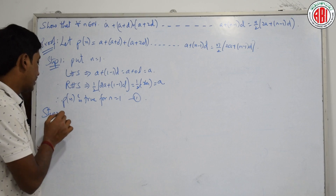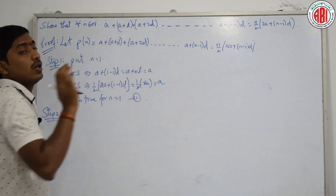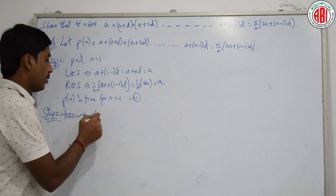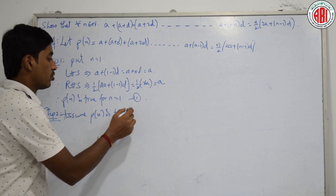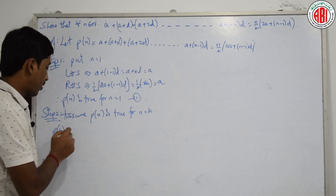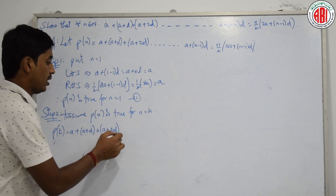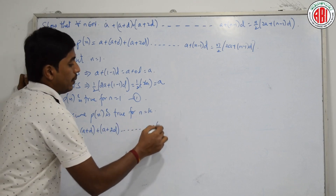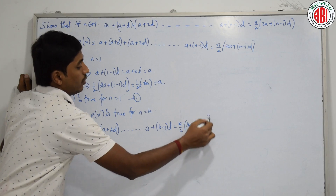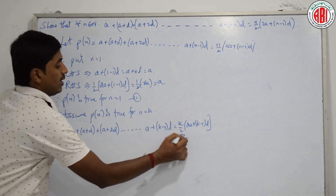Step 2: Assume P(n) is true for n equal to k. That is, P(k): A + (A+D) + (A+2D) + ... + (A+(k−1)D) = k/2 · (2A + (k−1)D). This will be our second statement.